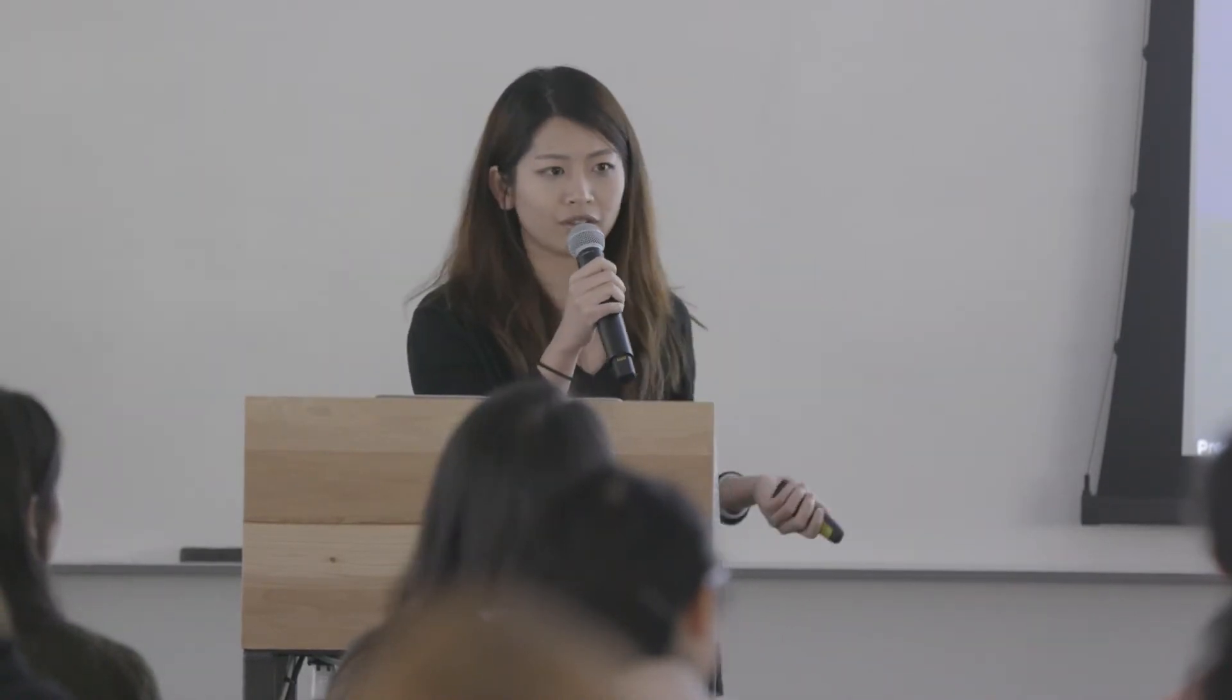So what is experimentation? This is the lifecycle of a product. We first identify the opportunity, then we make the prototype. We want to launch this experiment through our platform and if this experiment is very successful, it becomes a feature and we launch it to all the app. During this time we find and discover new opportunities.